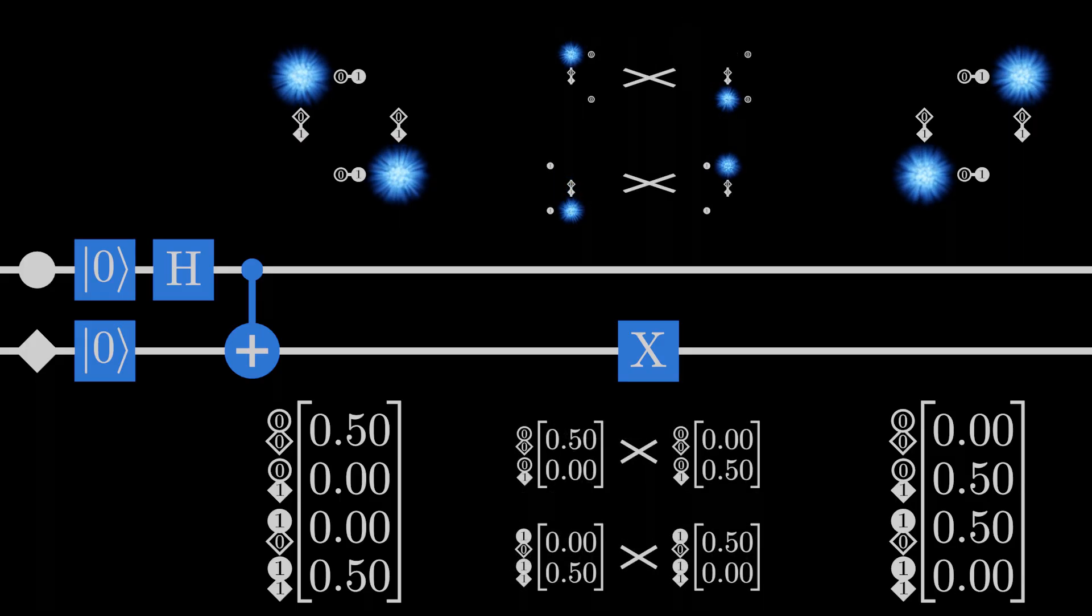In this circuit, we're applying the not gate to the second qubit. This means it works on two pairs, one where the first qubit will be measured as zero and one where it'll be measured as one.